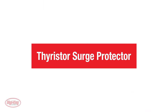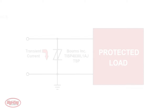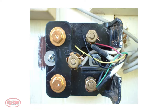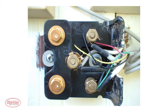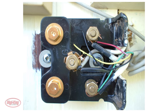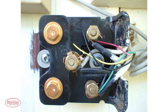A thyristor surge protector is a device that utilizes a thyristor to protect circuits from transient voltages. It is also connected in parallel with the load to be protected. But the thing that makes a thyristor surge protector different is that once it conducts, even if the transient has subsided, it will not restore to its non-conducting state unless the current through it is interrupted or drops below the minimum holding current. However, the high current capability of a thyristor surge protector makes it ideal for communication and control lines exposed to lightning. For example, the TISP4030L1AJ is designed to limit overvoltages on digital communication lines.